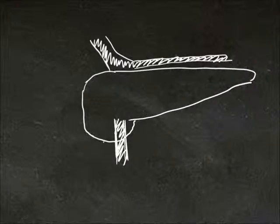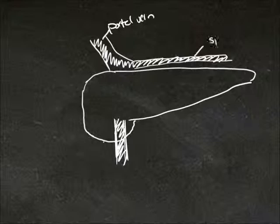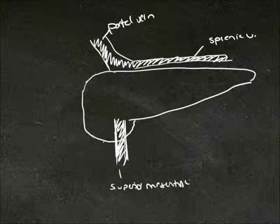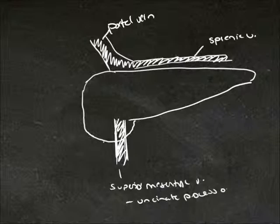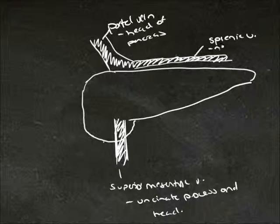Lastly, we'll cover the venous drainage of the pancreas. We have our portal vein, our splenic vein, and our superior mesenteric vein. The superior mesenteric vein drains the uncinate process and the head of the pancreas. The portal vein drains the head of the pancreas.